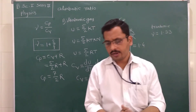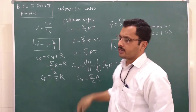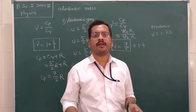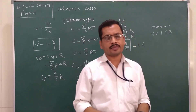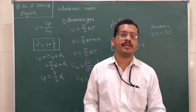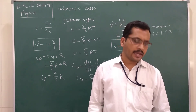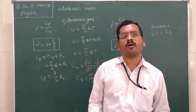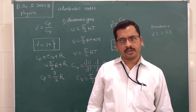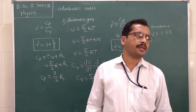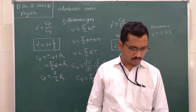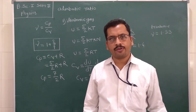Today we learned about the adiabatic ratio for different types of gases: monoatomic gas, diatomic gas, and triatomic gas. In the next lecture, we will discuss a very important topic — real gas. We know an ideal gas obeys all the laws at all temperatures and pressures. In the next lecture, we are going to see real gas and the properties of real gas. This is enough for today. Have a good day, bye.